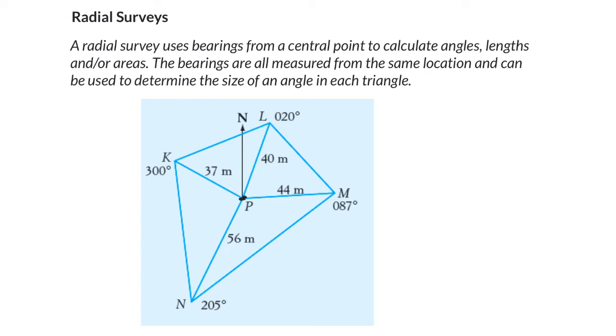So our radial survey is going to measure from this point P in the middle, often O as well. O in mathematics normally means the center of something. We've got our point P here and we're measuring everything from P. Now we're going to have everything as a bearing starting from north, but north is not actually a location here. North is the direction.